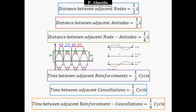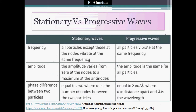After one quarter of a cycle, I went from antinode to node — that's the time between reinforcements and cancellations. After one half of a cycle from the beginning, I have the time between reinforcements. So if I had a reinforcement at the beginning, one half of a cycle after I have the other reinforcement. I hope this is making sense — you need to visualize this, which is why I have that animation. Now, a table from a Q&A: stationary versus progressive waves.